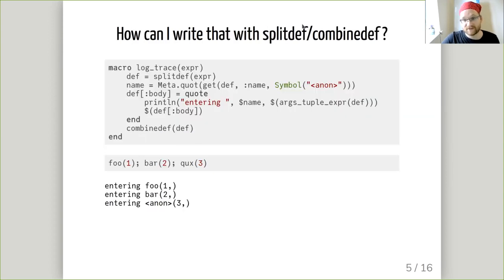How would I write this with splitdef and combineddef? At the high level, here's our macro. We start by calling splitdef, which gives us some dictionary. We're going to generate the code that's going to print the name, and then we're going to modify the body element of that dictionary to print out the name and then run the previous body. Finally, we'll call combineddef, which will give us the code that the macro will return. And you can see here that it works. My foo, bar, and quux all printed out the appropriate outputs.